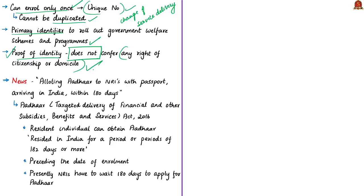The Aadhaar identity platform enables the Government of India to directly reach residents to deliver various subsidies, benefits, and services just by using the resident's Aadhaar number, through its inherent features of uniqueness, authentication, financial address, and eKYC. In addition to interchangeability, the Finance Minister also proposed allotting Aadhaar to Non-Resident Indians (NRIs) arriving in India on an expedited basis — that is, without waiting for 180 days. You may wonder that only residents of India can get Aadhaar, so how can an NRI get one?